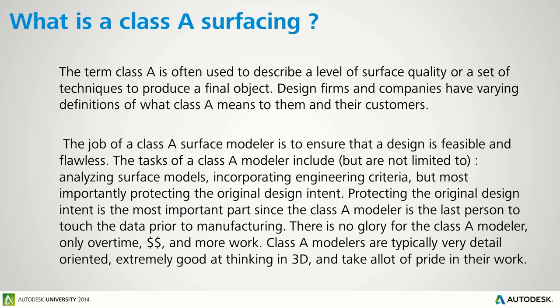Class A modelers typically are very detail-oriented people who pay close attention to minute details. If something is supposed to be offset a half millimeter, you don't have it go from 0.45 millimeters to 0.52 — it needs to be 0.5. The way I work, there isn't really a tolerance to that. Most Class A people are also very good at visualizing in three dimensions — they can look at a design, understand all the criteria, and figure out how best to manage it.